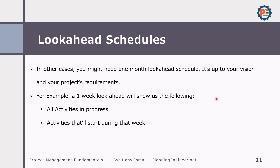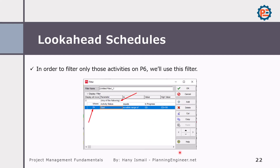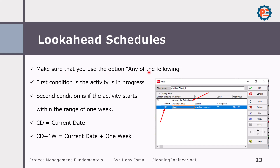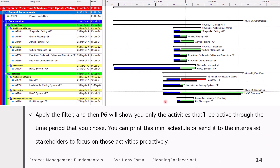Doing a look ahead schedule is very simple. Let's do the steps for a one-week look ahead schedule. We will show all in-progress activities and activities that will start during that week. From filters, we mainly create a look ahead schedule using filters. There is one ready-made filter you can find, or you can create your own. We will create one condition where the start is within a range of current date plus one week. CD means current date. Make sure to use the option 'Any of the following' because we are going to add another condition — activity status equals in-progress, or start is within range of current date plus one week.